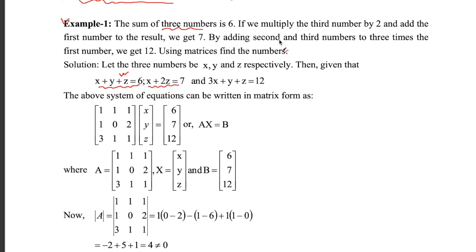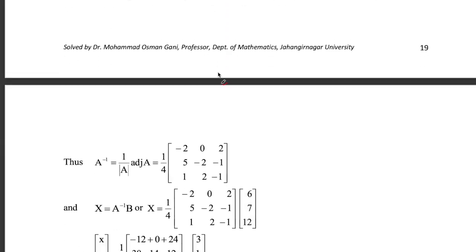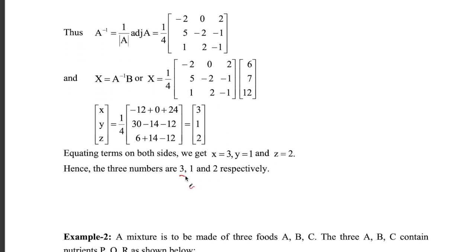By adding the second and third numbers to three times the first number we get twelve. Using matrices, find the numbers. According to the question you will first need to create this linear system and then solve it by the matrix method, as done in my previous lecture. The result will be x=3, y=2, z=1, or three, one, and two respectively.